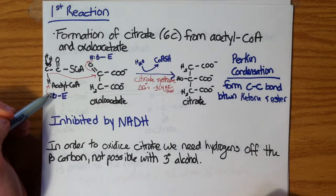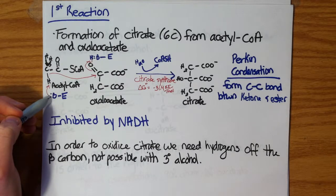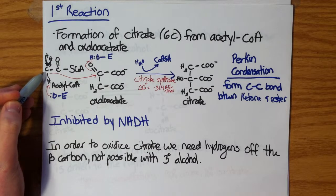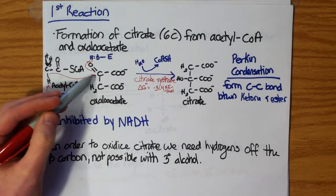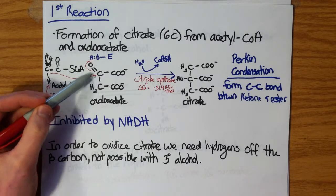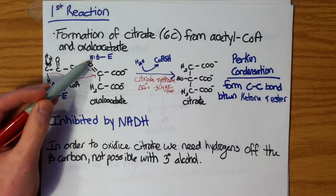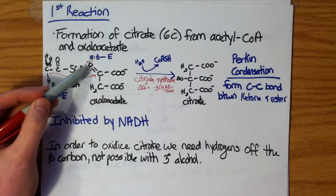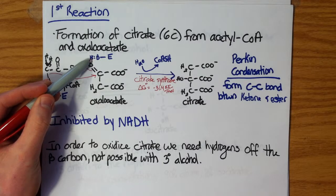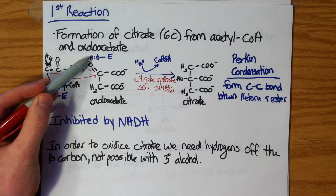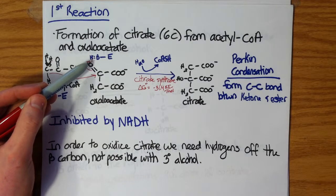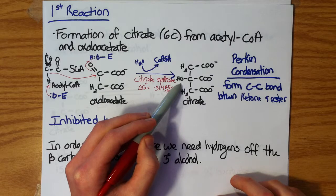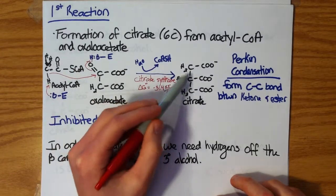Basically, a base from the enzyme — some basic amino acid like histidine, lysine, or arginine, mostly histidine — will pick off this hydrogen from the terminal methyl group of acetyl-CoA, which then displaces its electrons onto the carbon to form this carbon-carbon bond. Since we have excess electrons on carbon, it gets pushed onto the oxygen, and that oxygen, being highly electronegative with too many electrons, will pick off a hydrogen from another residue of the enzyme, forming a hydroxyl group. We can see that hydroxyl group here on citrate — we've now formed this six-carbon compound.